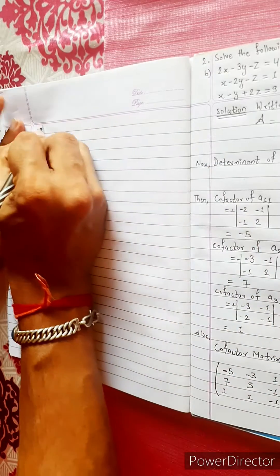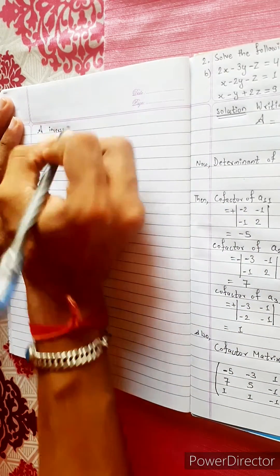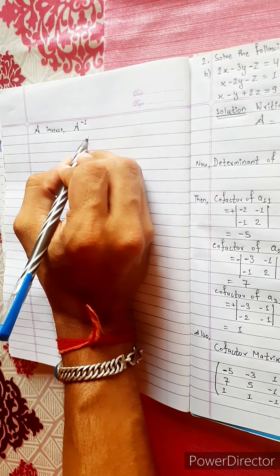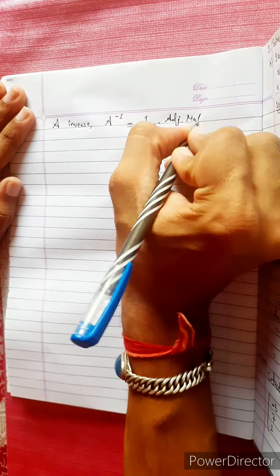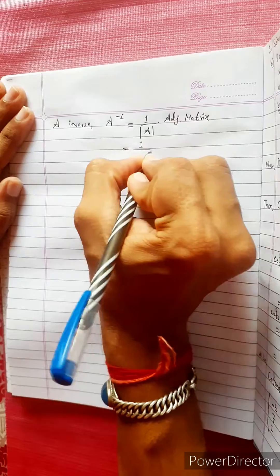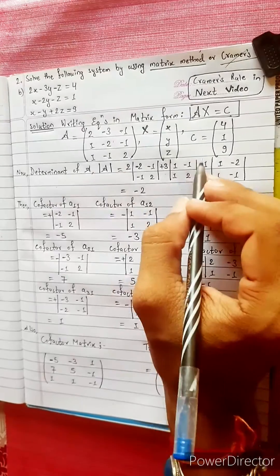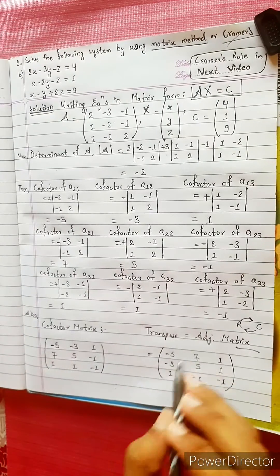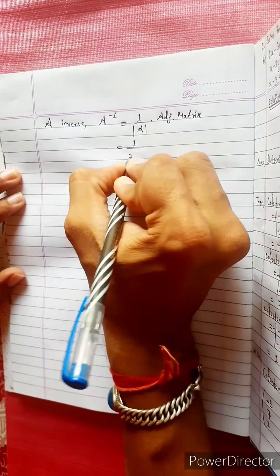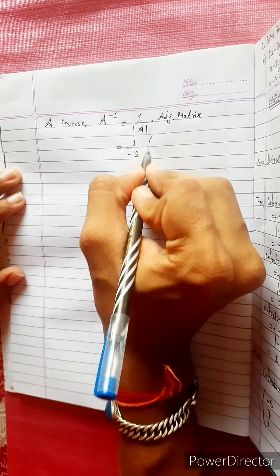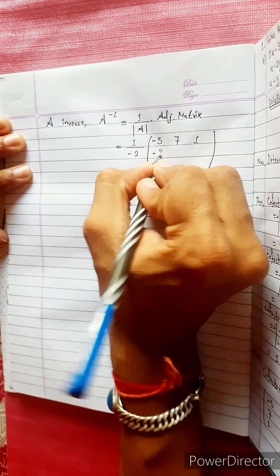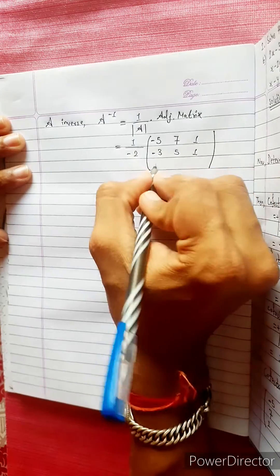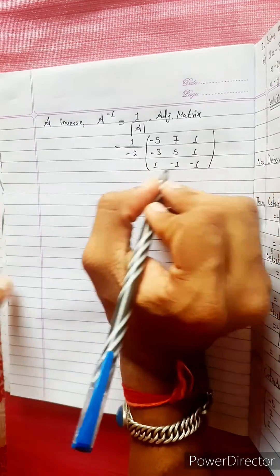This is A inverse. A inverse is A to the power minus 1. The formula is: A inverse equals 1 divided by the determinant, multiplied by the adjoint matrix. The determinant is minus 2. So A inverse equals 1 over minus 2, multiplied by the adjoint: minus 5, 7, 1; minus 3, 5, 1; minus 1, minus 1, minus 1.